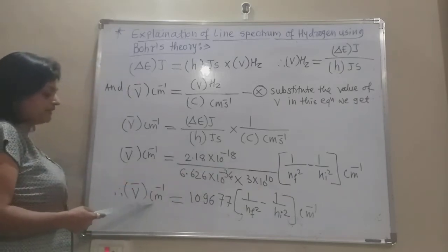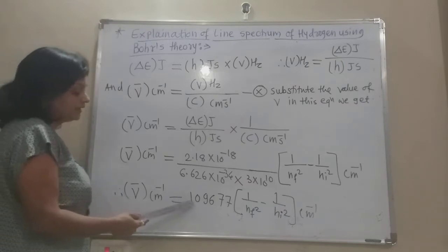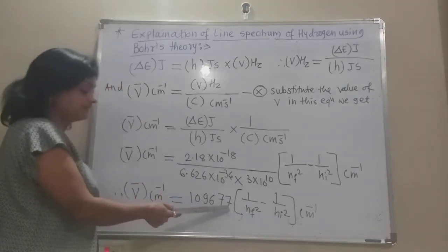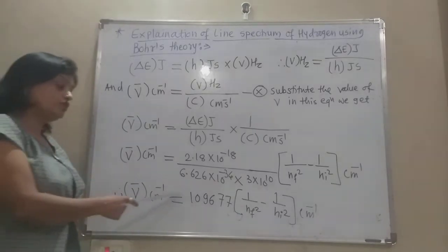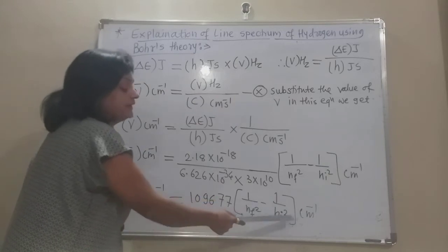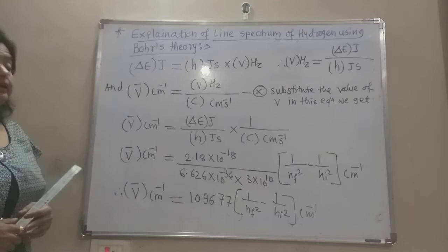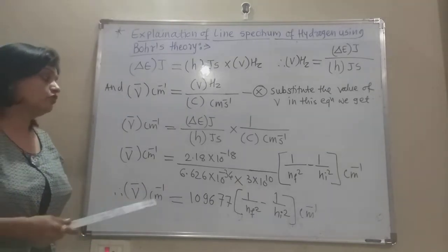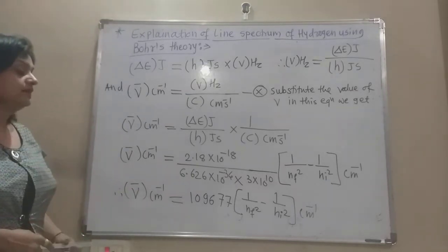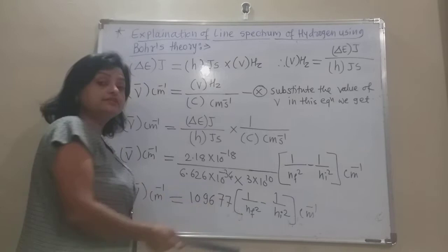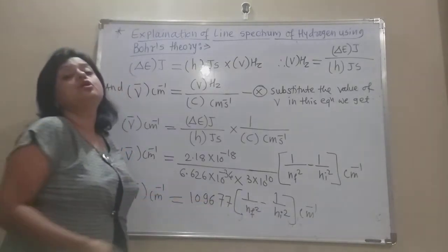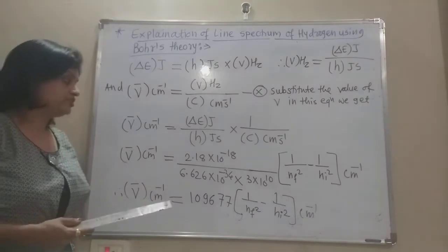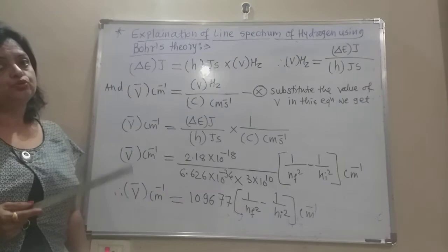Calculating all these values, the wave number equals 1,09,677 per centimetre, multiplied by the quantity 1 over Nf squared minus 1 over Ni squared. This constant 1,09,677 per centimetre is the Rydberg constant. This proves that Nf, the final energy level, and Ni, the initial energy level, are values of the principal quantum number, consistent with Bohr's stationary states where n equals 1, 2, 3, 4, and so on.